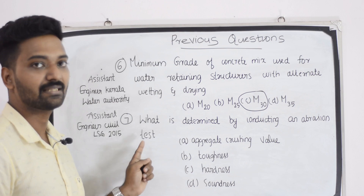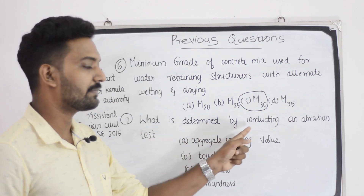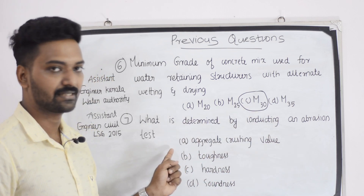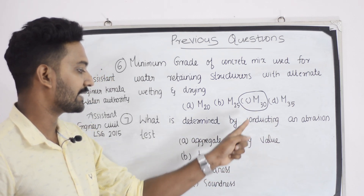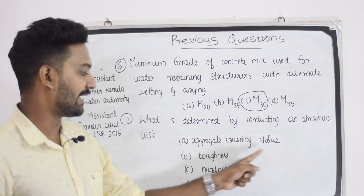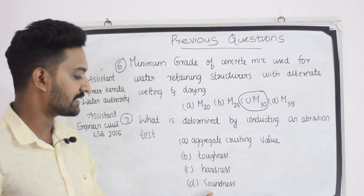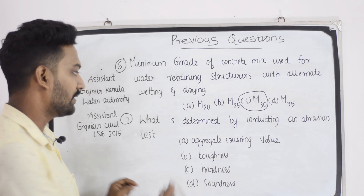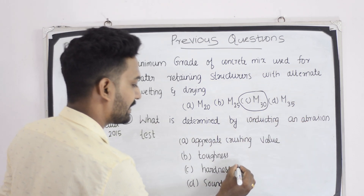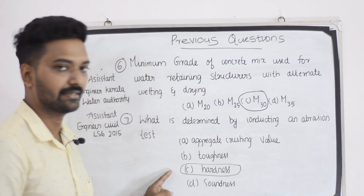Next question — assistant engineer, civil LSG: what is determined by conducting an abrasion test? Option: aggregate crushing value. Second option, toughness. Third option, hardness. And fourth option, soundness. The answer is hardness.